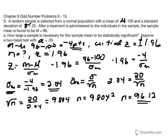But we don't want our z value to equal 1.96 — we want it to be greater than 1.96. Therefore we can conclude that n would need to be greater than 96.12 to produce a z value that falls in the critical region.